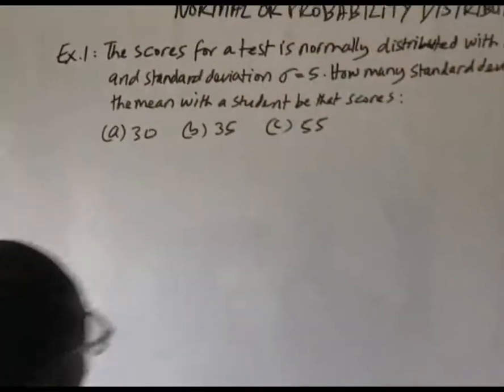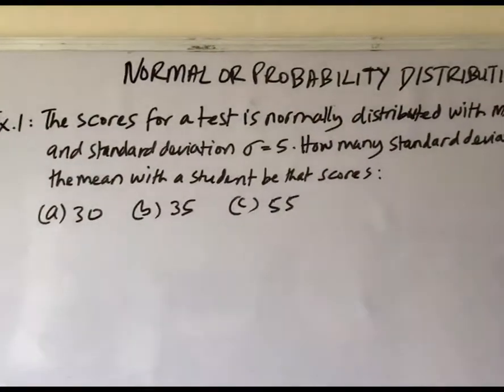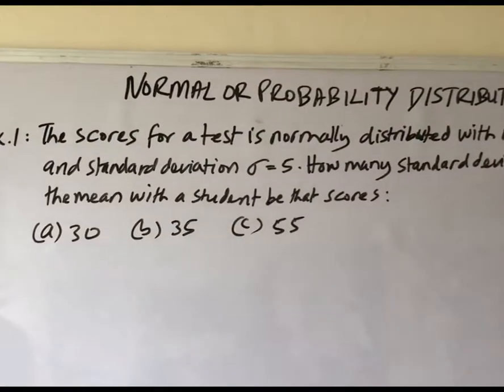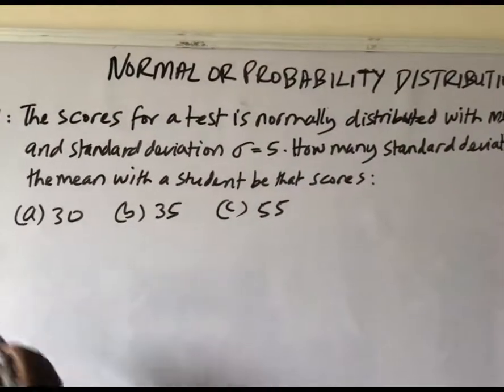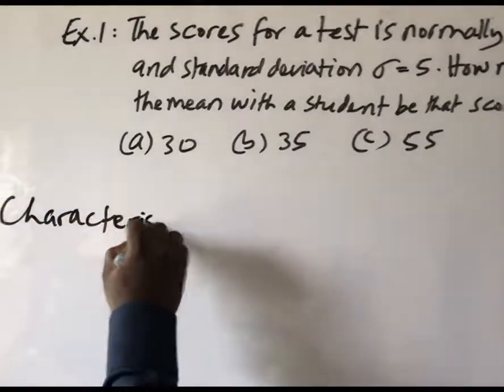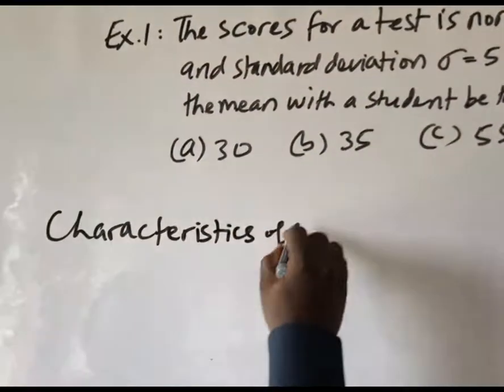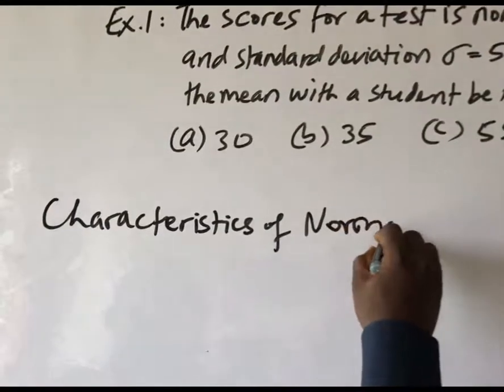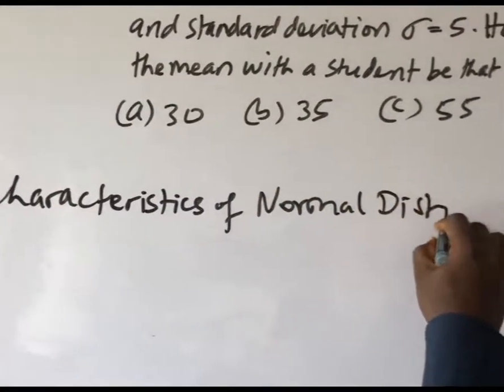Now let's look at what we have. Let me explain normal distribution using a typical bell-shaped Gaussian curve. There are certain characteristics that we need to know of normal distribution.